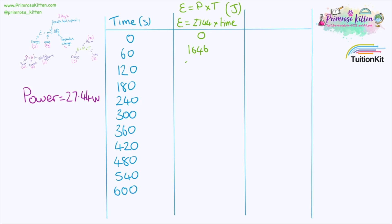So that is simply the time which is down this one times the power which is this value here. So 60 times 27.44, 120 times 27.44, 180 times 27.44, 240 times 27.44. And we're going to be using these values to plot a graph.